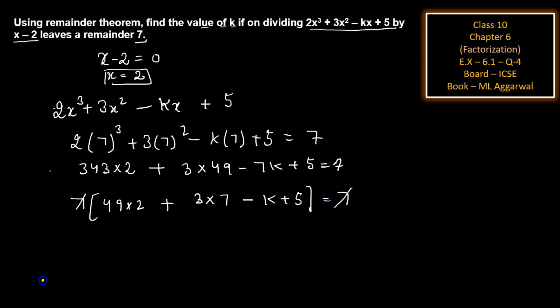Now further simplify. Then we get 49 × 2 = 98 plus 3 × 7 = 21 minus k plus 5.